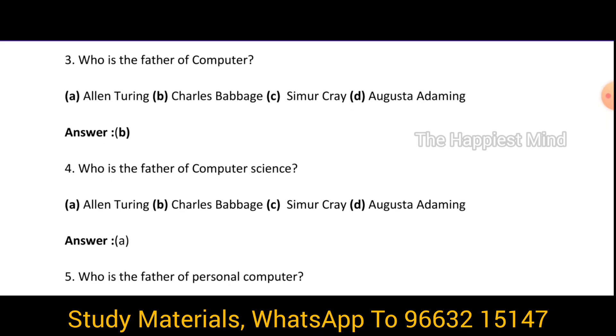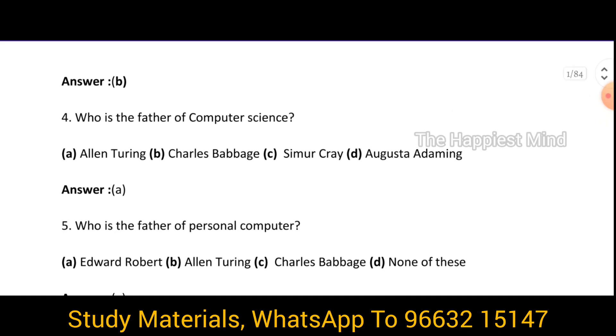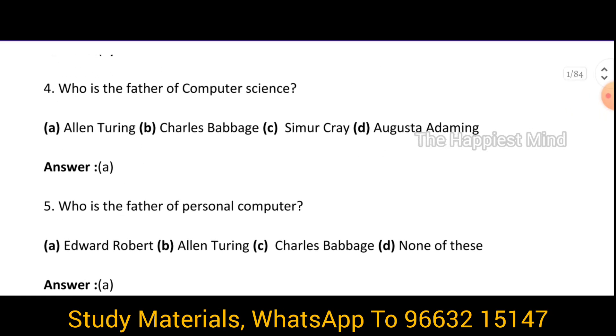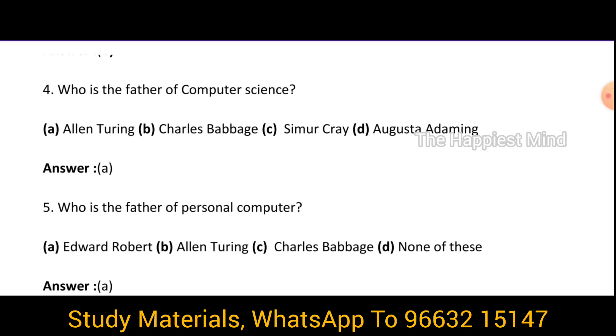Question 4: Who is the father of computer science? It is option A — Alan Turing. Alan Turing is the father of computer science.